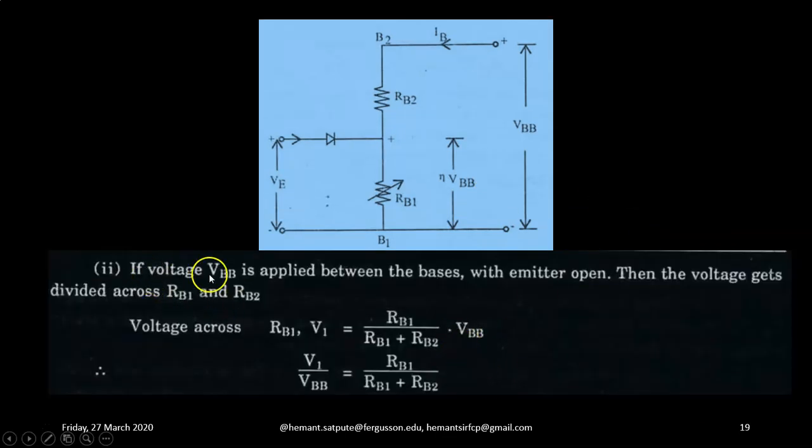Case 2: if voltage VBB is applied between the bases between B2 and B1 with B2 positive with emitter open, there is no voltage across the emitter. Then the voltage gets divided across RB1 and RB2 because only VBB is applied and there are two resistances in series RB1 and RB2. So this will form a potential divider arrangement. So voltage across RB1 will be equal to V1 and that is equal to RB1 upon RB1 plus RB2 into VBB.